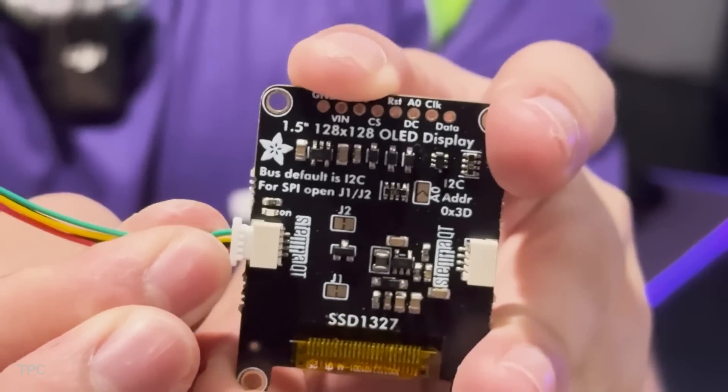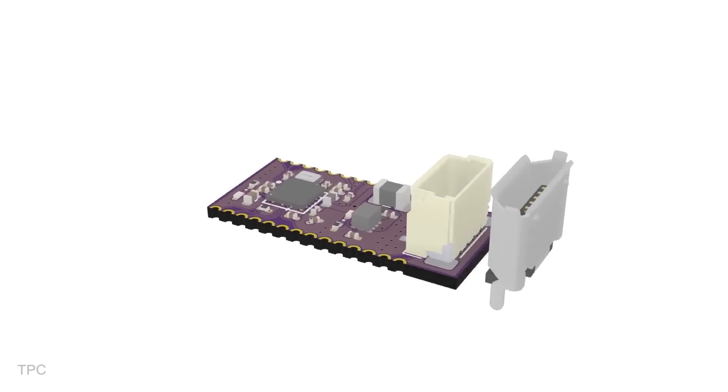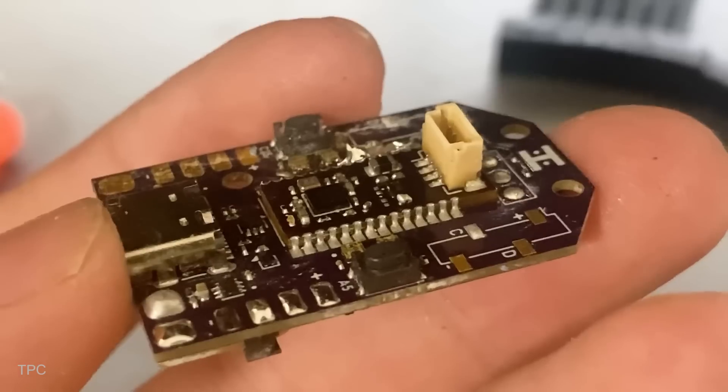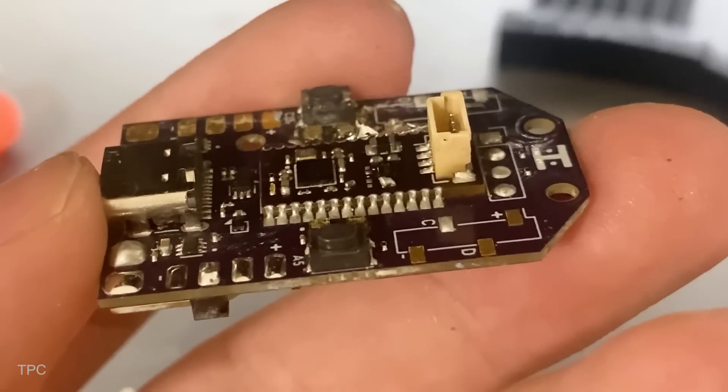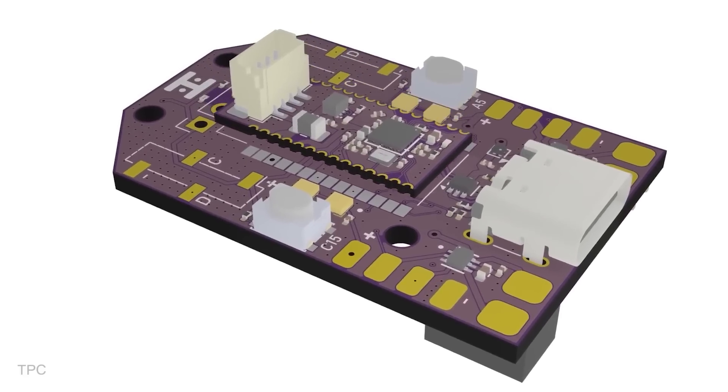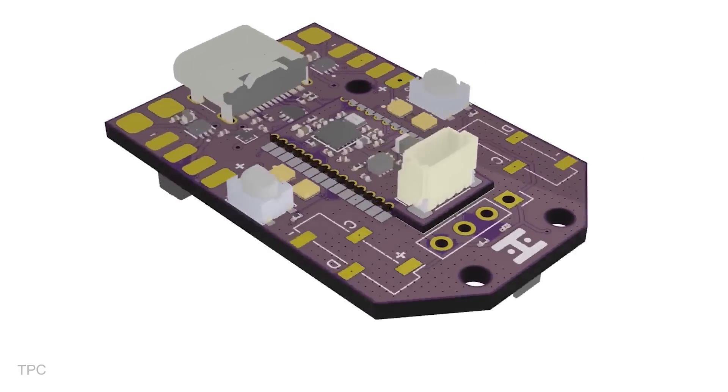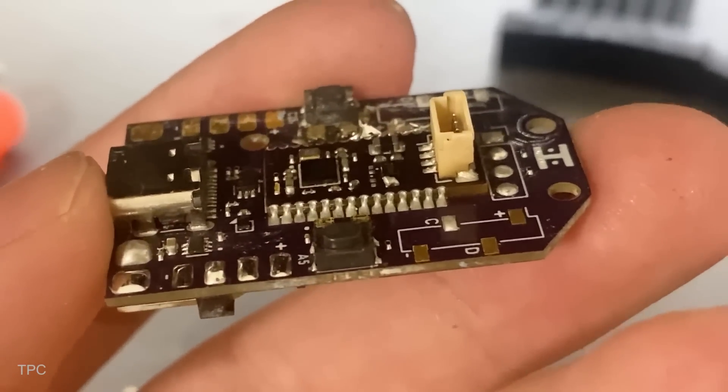For programming, the board uses a small 4-pin connector instead of USB, keeping the size as small as possible. The PCB design required precision, especially since the microcontroller's pins are located underneath the chip. Despite facing some soldering difficulties, the board was successfully built and tested.